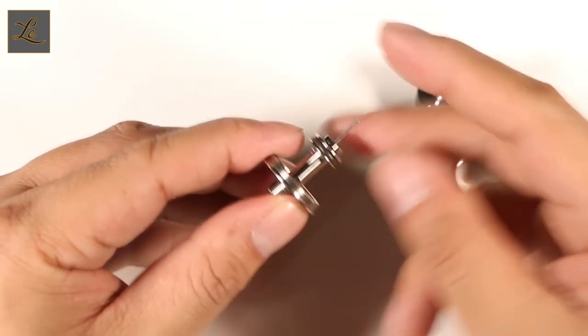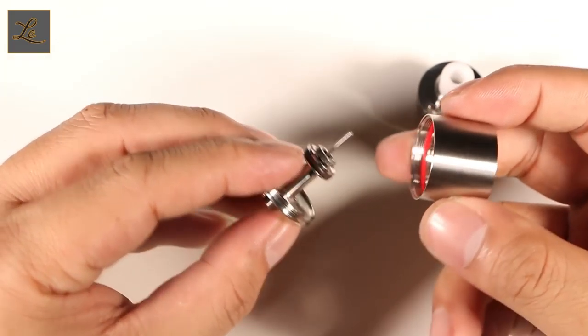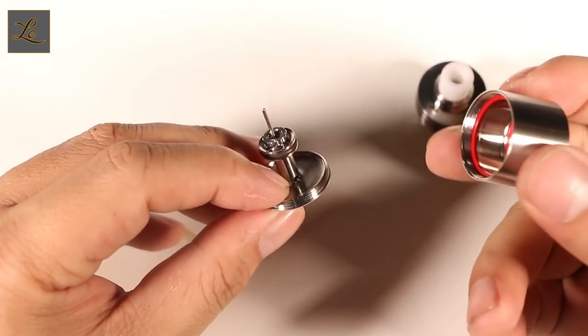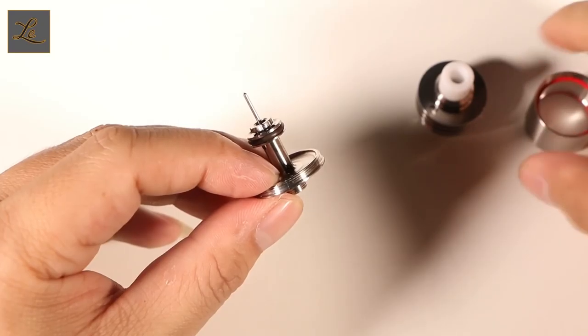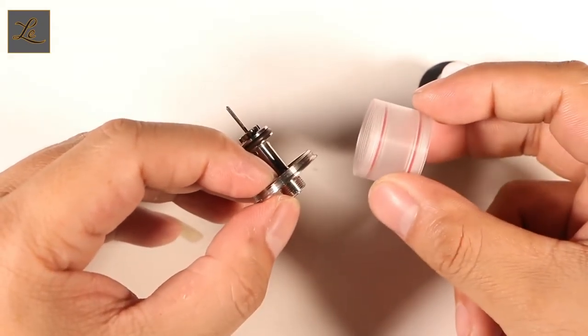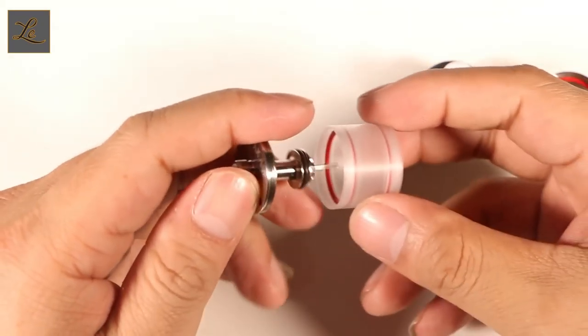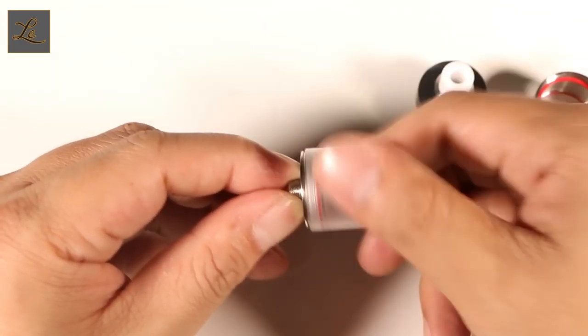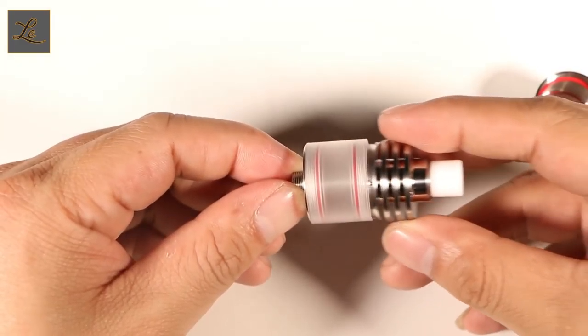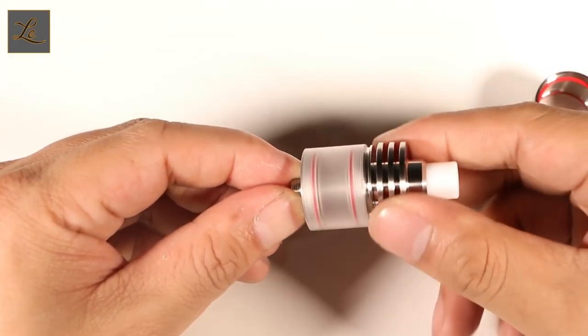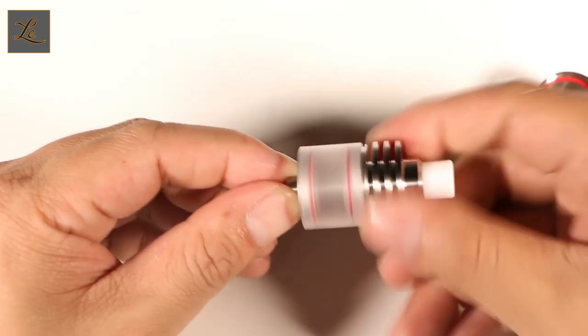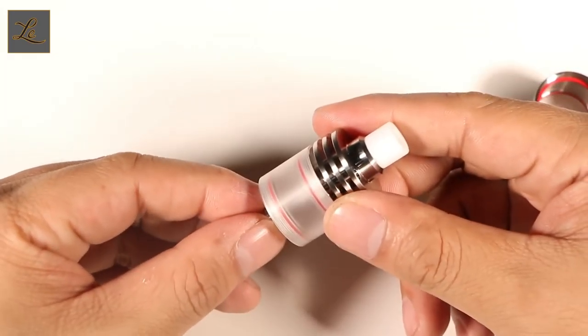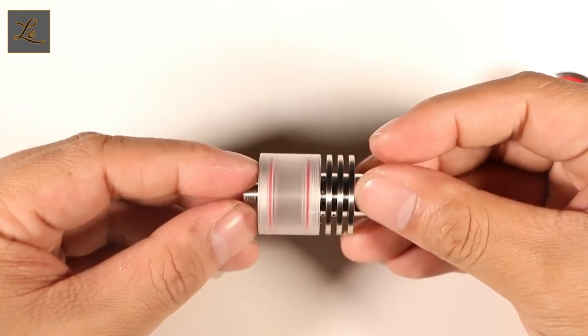Besides the standard 3ml stainless steel tank, it does come with other few accessories that you can purchase separately. First of all, there's a clear tank. As you can see, this is a clear tank. The clear tank holds 3ml of e-liquids as well. The advantage of a clear tank is basically you can see how much juice is left in your tank. Just screw it on back again, looks really cool.